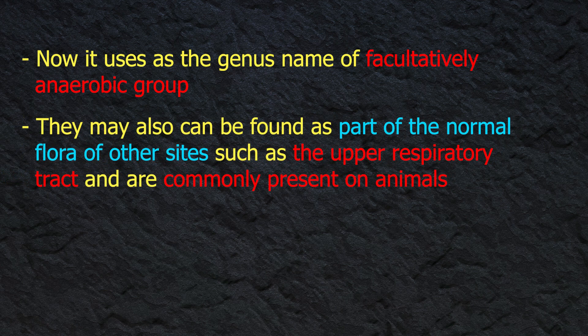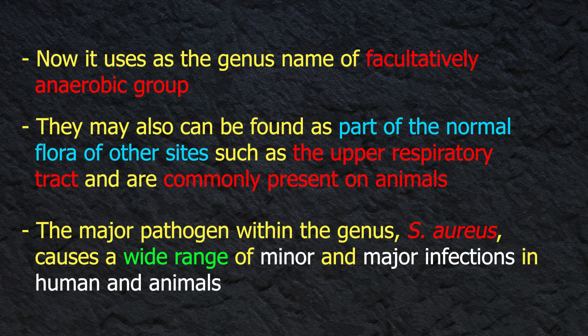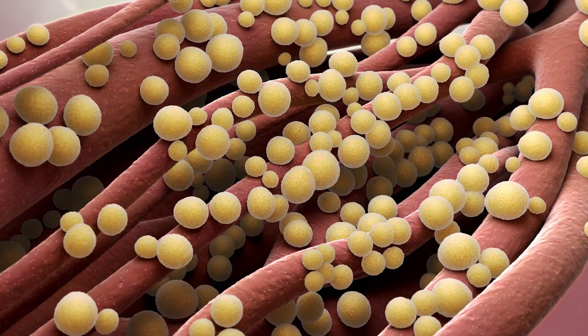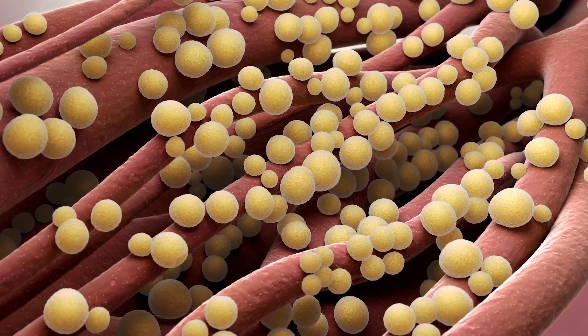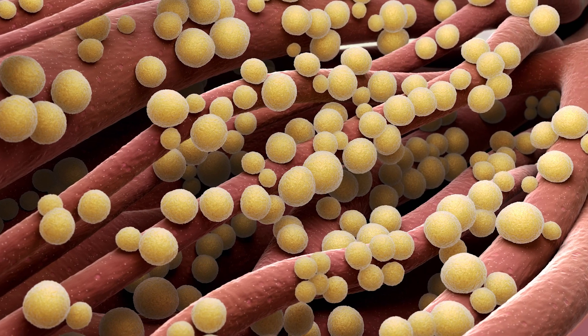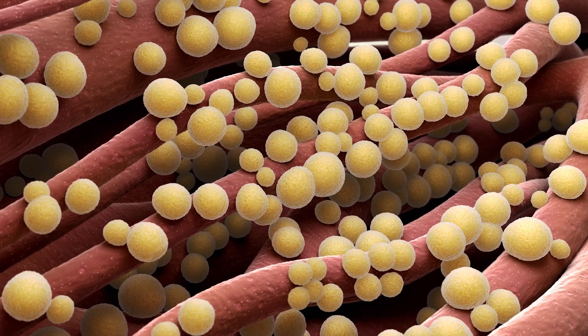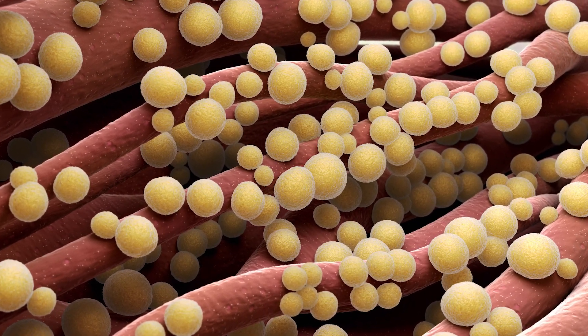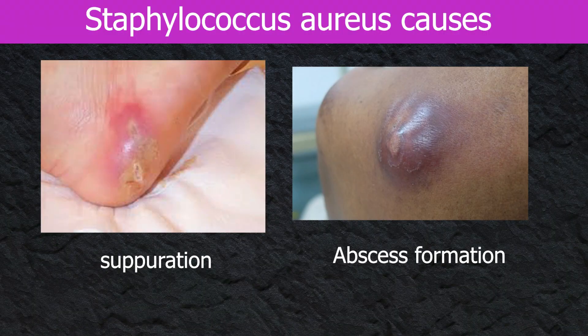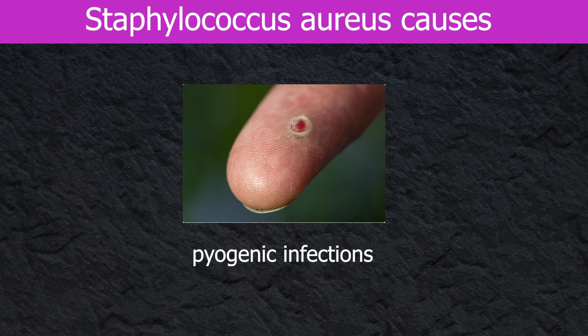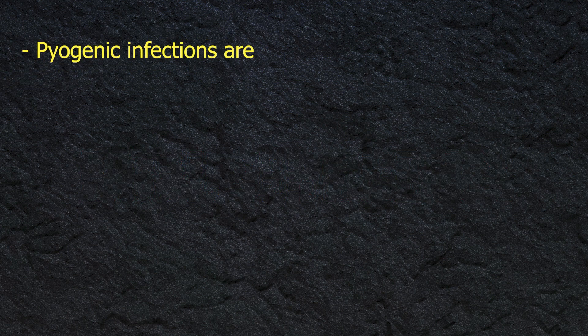Staphylococci are facultatively anaerobic and may also be found as part of the normal flora of other sites such as the upper respiratory tract, and are commonly present on animals. The major pathogen within the genus is S. aureus, which causes a wide range of minor and major infections in humans and animals, including abscess formation and a variety of pyogenic infections, and can even cause fatal septicemia.